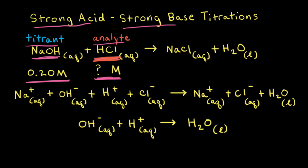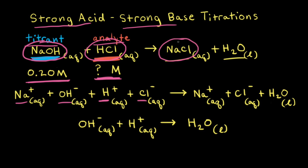When our strong acid hydrochloric acid reacts with our strong base sodium hydroxide, the products are an aqueous solution of sodium chloride and water. As a quick review of how to write the complete ionic equation: sodium hydroxide, being a strong base, dissociates completely in aqueous solution to form sodium cations and hydroxide anions. Hydrochloric acid, being a strong acid, ionizes completely in aqueous solution to form H⁺ ions and chloride anions. Sodium chloride is a soluble salt, so in aqueous solution we would have sodium cations and chloride anions, and of course water.